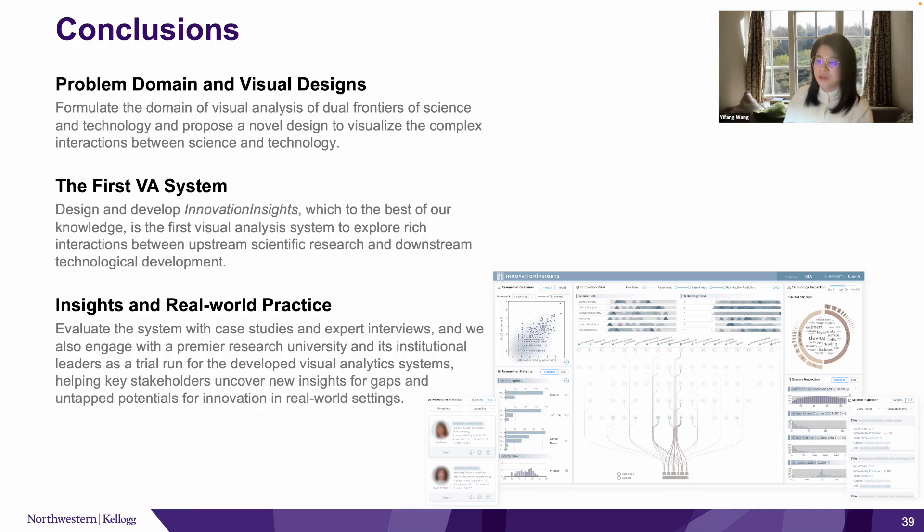Our system, as the first of its kind visualization system for researchers and research institutions to explore the complex interaction between science and technology, not only fulfills our original design purposes—that is, to allow users to better identify the sources of technological inventions and understand the impact of scientific research—it also enables an array of new applications ranging from identifying untapped innovation potential within an institution to forging new partnership opportunities between science and industry. Moreover, the proposed science-of-science metrics, prediction model, and visualization system can easily be adapted for studying other upstreams such as funding and downstream such as policy documents' linkage to science.